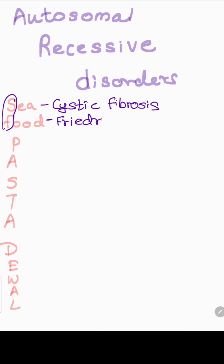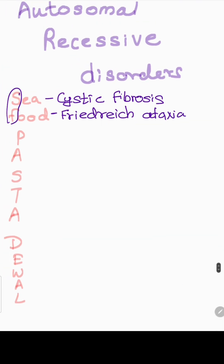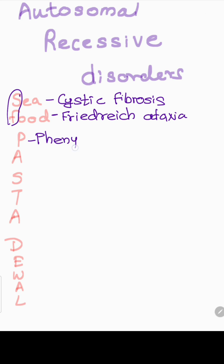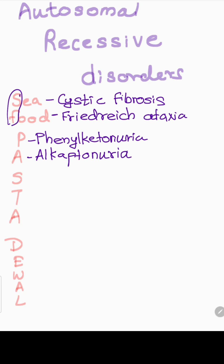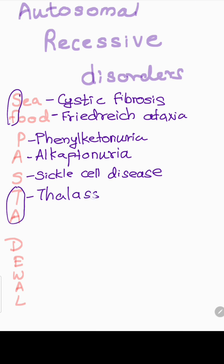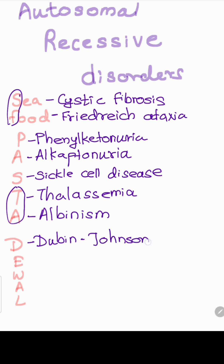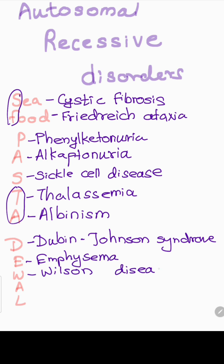P is for phenylketonuria, A is for alkaptonuria, S for sickle cell, T for thalassemia — T and A together make thalassemia. A is for albinism. In 'devil', D is for Dubin-Johnson syndrome, E is for emphysema which is alpha-1 antitrypsin deficiency, W is for Wilson's disease.